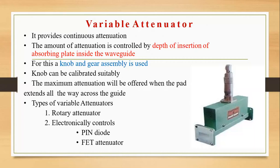For the knob, a gear assembly is used. The knob can be calibrated suitably. The intersections of the turning knob lines give you the value. Maximum attenuation is offered when the pad extends all the way across the guide. There are two further types: rotary attenuator, and electronically controlled types — including pin diode and FET attenuator — though those are not in your syllabus.